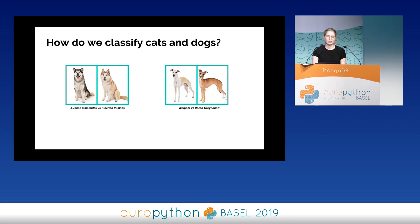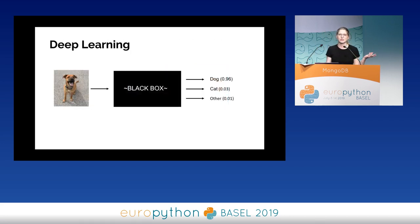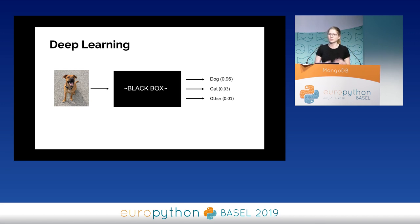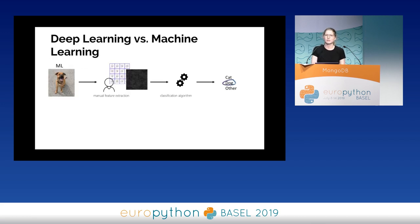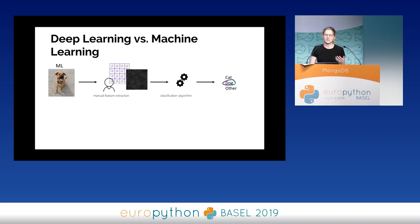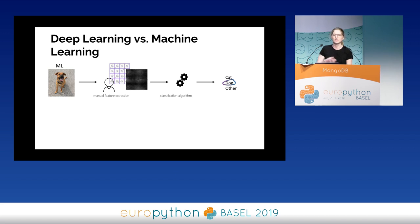The way we're going to approach this today is using a technique called deep learning. This is often viewed as a black box where you have an input — the dog photograph — and you get outputs of either dog, cat, or other. In this demo we'll go further to identify which breed. This differs from traditional machine learning where you'd be doing manual feature extraction, which requires hands-on work to discern which features are most important, plus domain expertise.